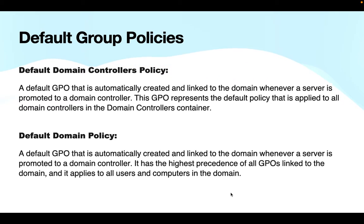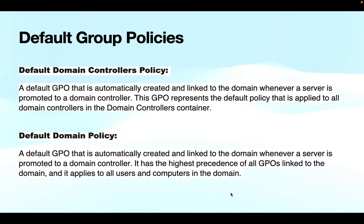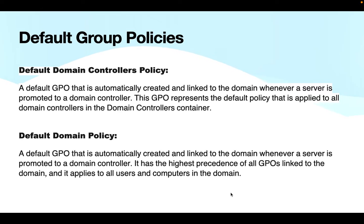The Default Domain Controller Policy is automatically created and linked to the domain whenever a server is promoted to a domain controller. In Active Directory, there will be by default some Organizational Units (OUs) created. There is one OU called Domain Controllers, and this group policy is linked to that particular OU by default.